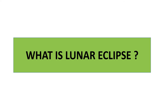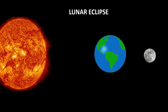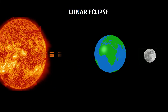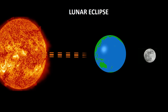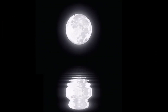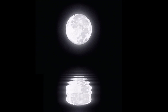What is a Lunar Eclipse? A Lunar Eclipse is when the Earth is exactly between the Moon and the Sun, so none of the Sun's rays can hit the Moon. A Lunar Eclipse can only happen at Full Moon.